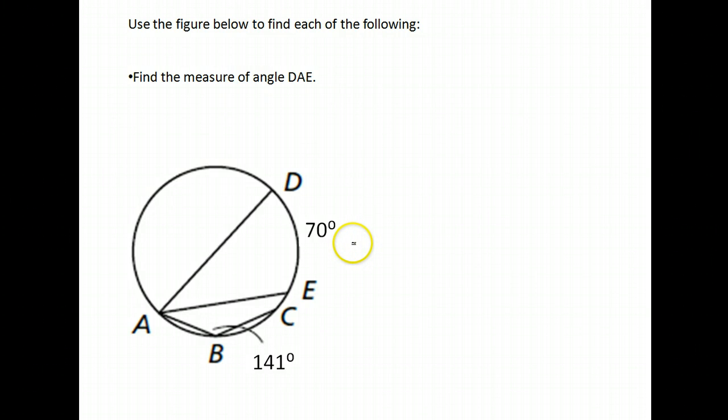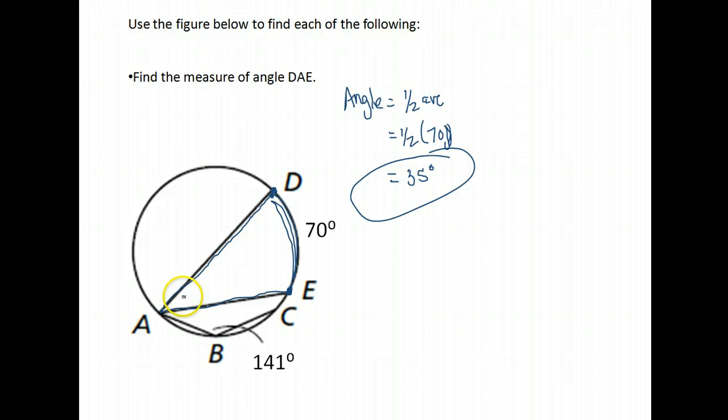All right, use the figure below to find each of the following. We're only asked to find one thing. It wants us to find the measure of angle DAE. So again, I'm going to mark off where that angle is located. D down to A and out to E. Here's the arc that it creates from D to E. We want the measure of the angle. Now remember, our property again says that the measure of the angle for an inscribed angle is half of the arc that it creates. Notice the arc that it creates is 70 degrees in this case, so we're just doing half of 70, which is 35 degrees. And that simple, we found angle DAE is 35 degrees.